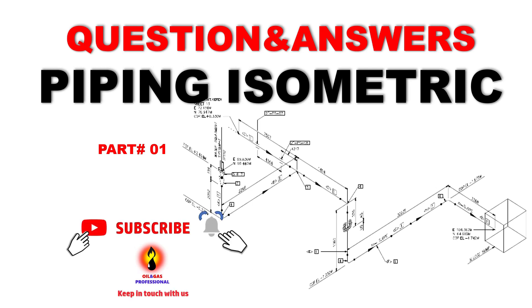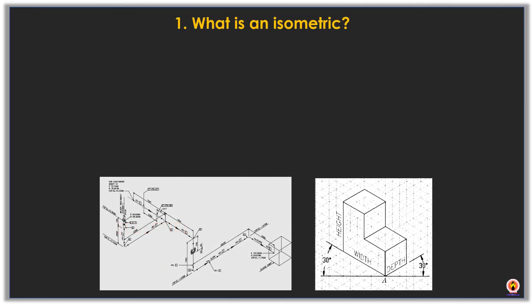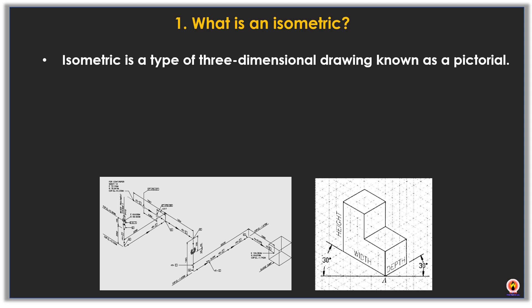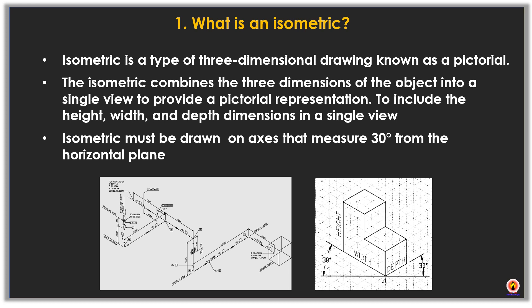An isometric is a type of three-dimensional drawing known as pictorial. The isometric combines the three dimensions of an object into a single view to provide a pictorial representation, including the height, width, and depth dimensions. An isometric must be drawn on an axis that measures 30 degrees from the horizontal plane.